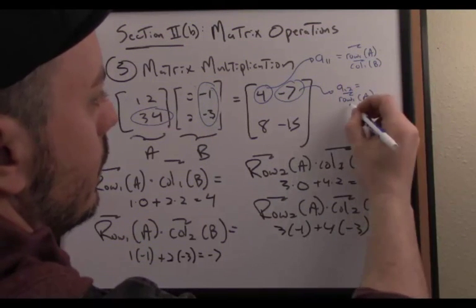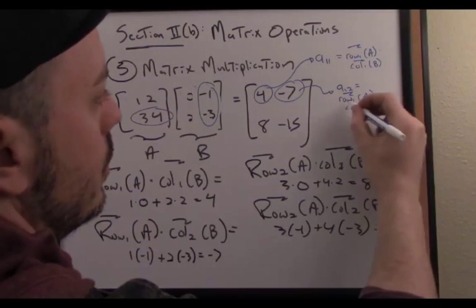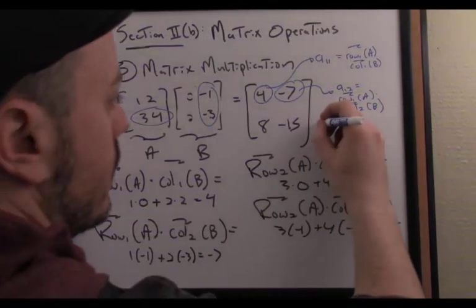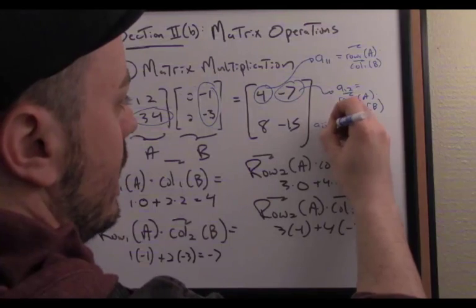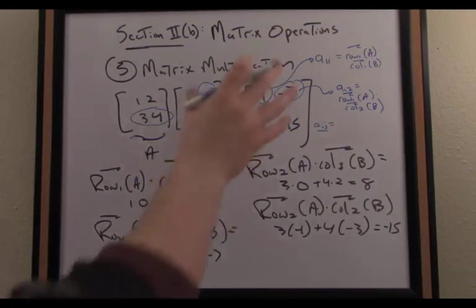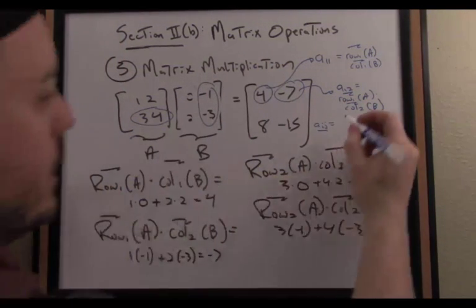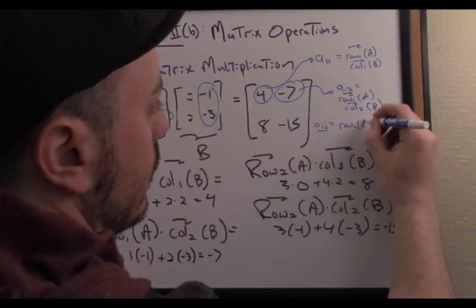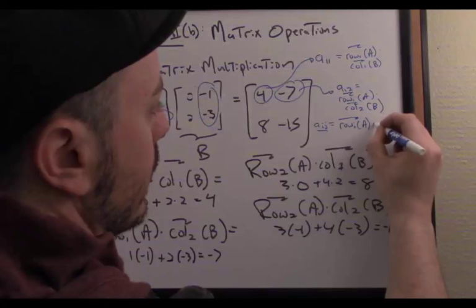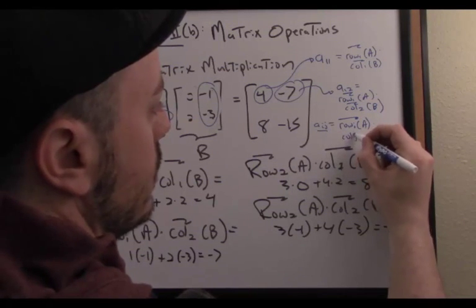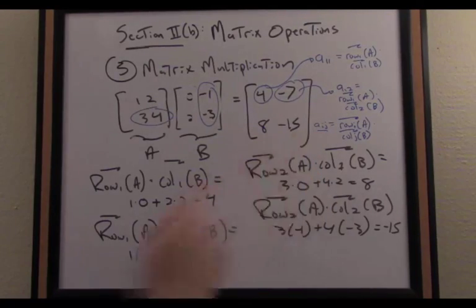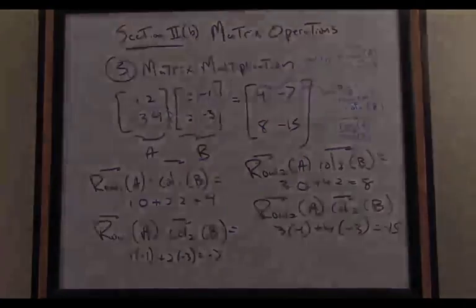Generally speaking, to determine the IJ element of our resultant matrix, the general pattern is as follows: I take row I of the left matrix as a vector and dot it with column J of the right matrix as a vector. So there is the algebraic definition of matrix multiplication.